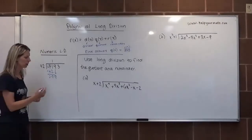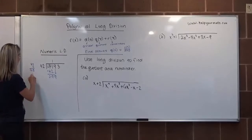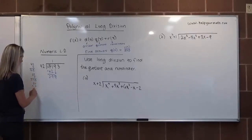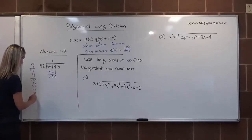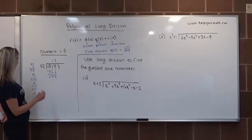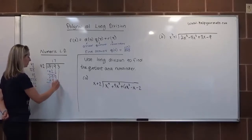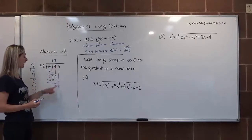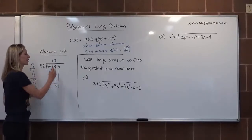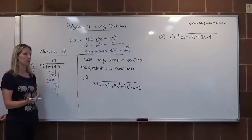42 goes into 299 — let me check: 42 times 7 is 294, which just barely fits. So 42 goes into 299 seven times, leaving us with a remainder of 53 after subtracting 294 and bringing down the 3. Then 42 goes into 53 once, and after subtracting we have 11. So we can write remainder 11.